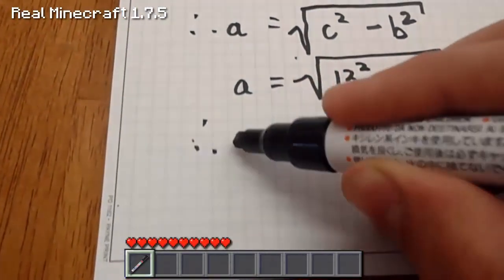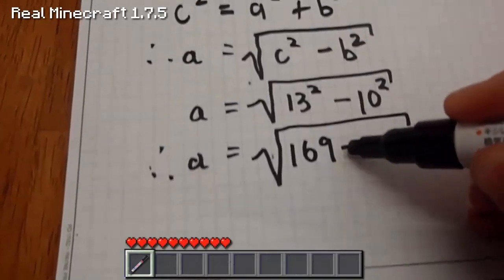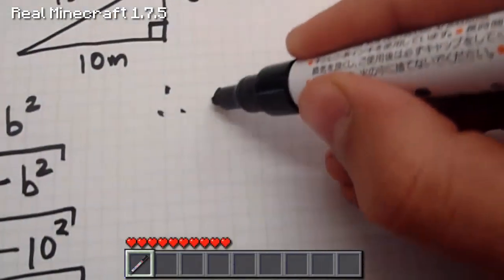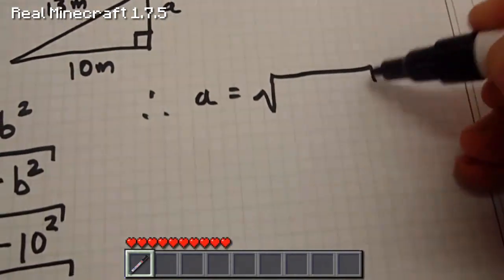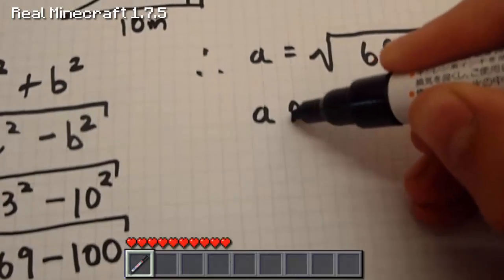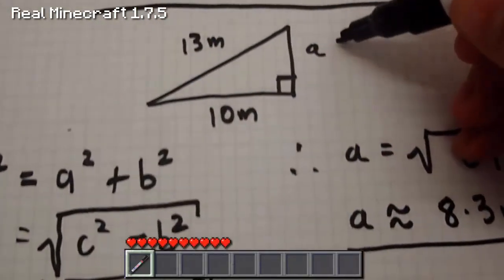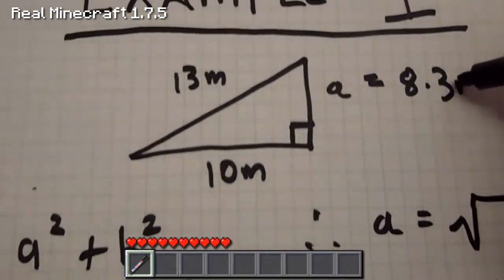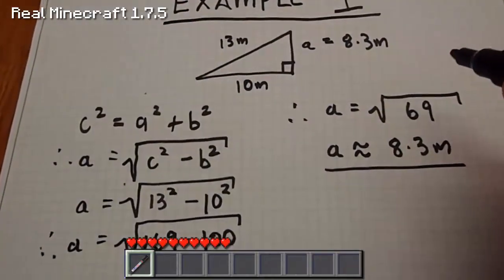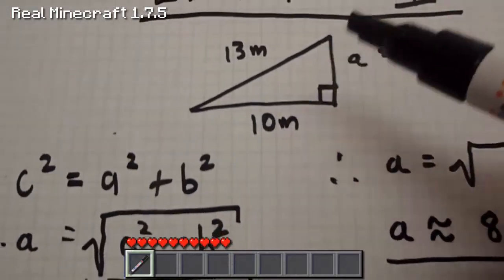Therefore A equals the square root of 169 minus 100, which is the square root of 69, which means A approximately equals 8.3 metres. So the length of A equals 8.3 metres - pretty simple stuff. And that is using the Pythagoras theorem to work out the distance of a side of a triangle when you know the other two sides.